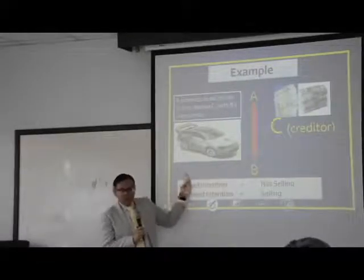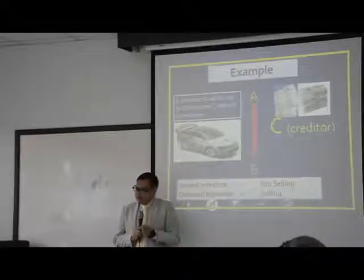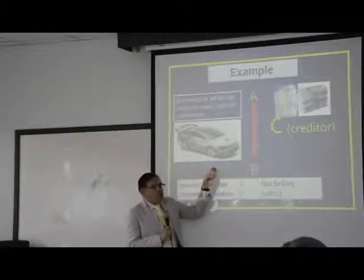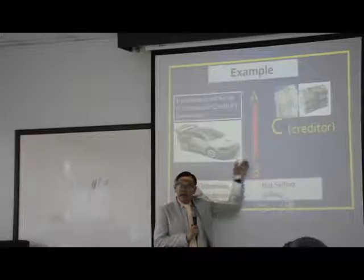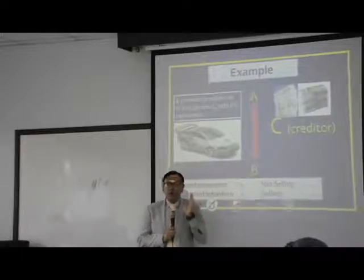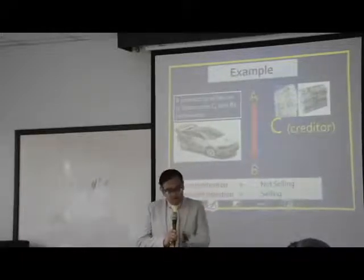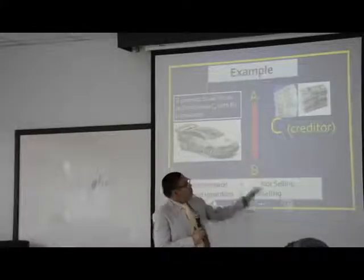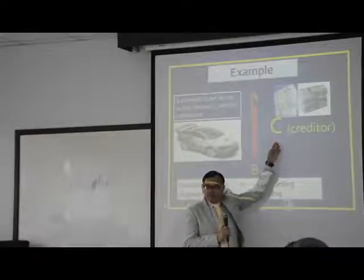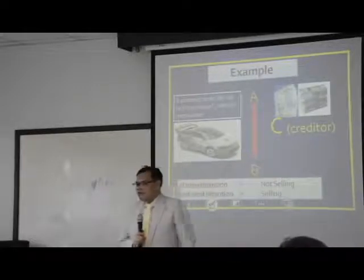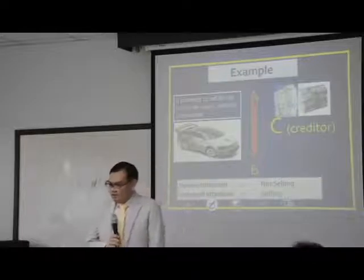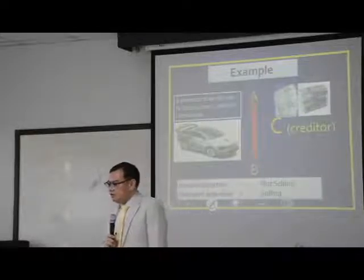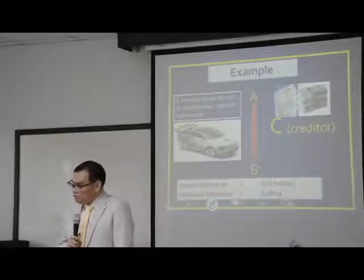Let's have a look. We have A and B. In the case of a fictitious intention, we are dealing with the situation where A and B enter into some conspiracy or some connivance. Let's say that A borrowed money from C. A has borrowed money from C. In this case, A is the debtor. C is the creditor. As you are aware, the creditor may demand the debtor to perform the obligation.